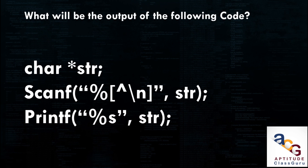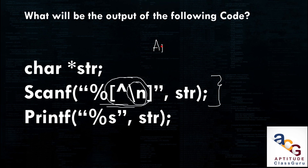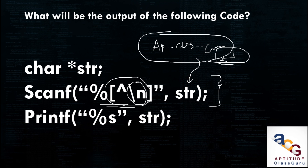What will be the output? char *str; scanf("%[^\n]", str); printf("%s", str). The format specifier %[^\n] takes input until a newline is encountered — it reads everything including spaces until you press Enter. The total sentence typed is stored in str, and printf prints the entire sentence as entered.